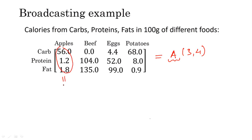The addition of all the elements gives us 56.0 plus 1.2 plus 1.8, which equals 59 calories. To find the percentage of calories from carbs, it would be 56 divided by the total of 59, which is approximately equal to 94.9 percent.